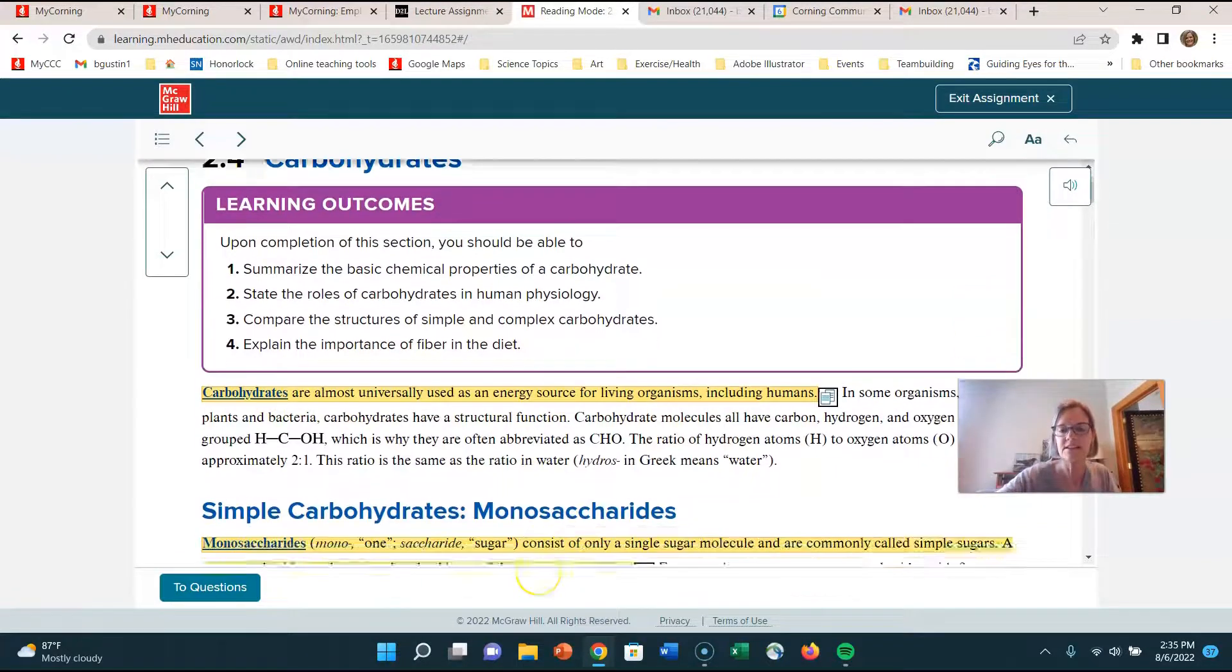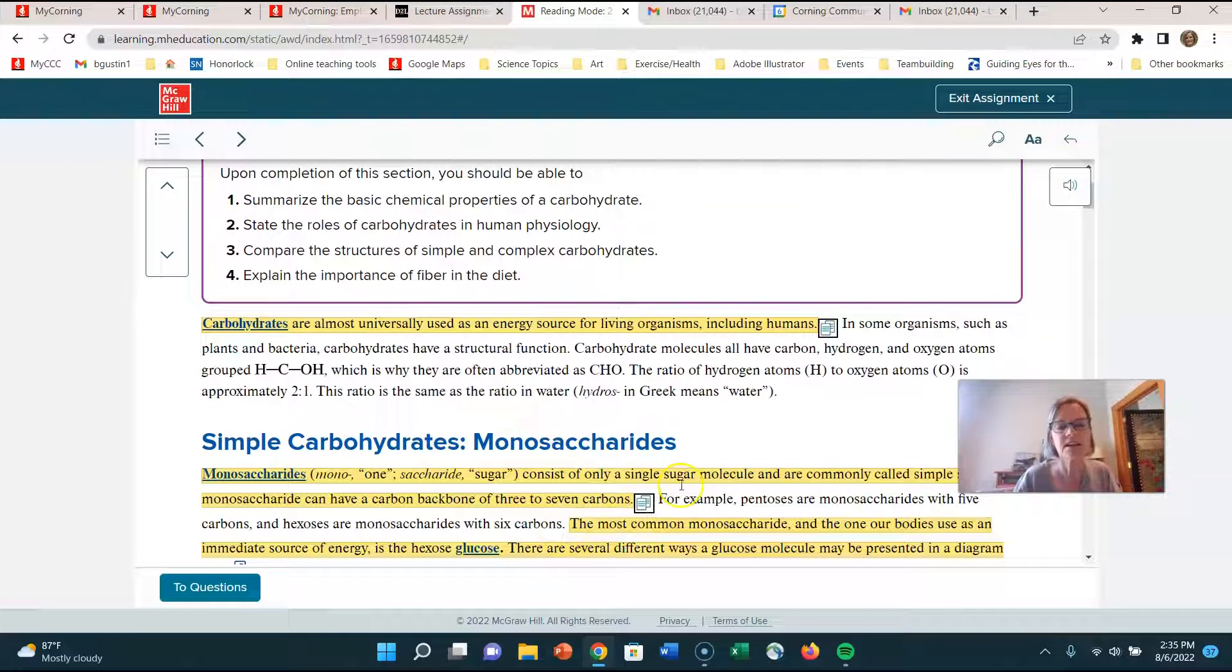And it says carbohydrates are composed of carbon, hydrogen, and oxygen atoms. And usually, they're in the ratio of carbon with the hydrogen and the oxygen at two to one, like water, H2O. So carbon and then hydrate, carbon and water. And that's where they originally got their name.